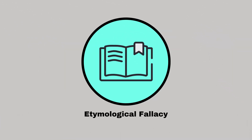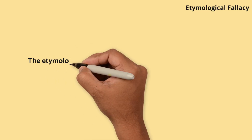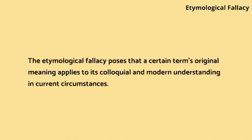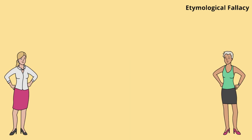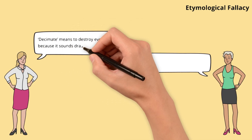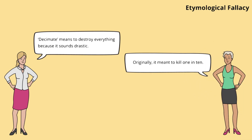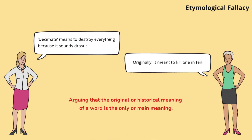Etymological fallacy. The etymological fallacy posits that a certain term's original meaning applies to its colloquial and modern understanding in current circumstances. Isabella assumes the meaning of a word should remain static over time. Charlotte explains how meanings evolve, showing the importance of current usage over historical origins.